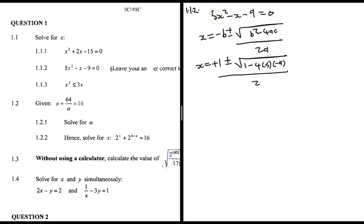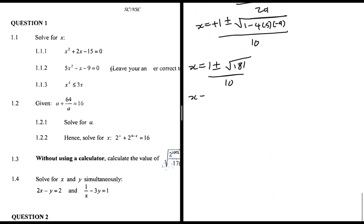a is 5, so 2a = 10. I put everything inside the square root into my calculator: 1 - 4 × 5 × (-9) gives 181. So x = (1 ± √181) / 10.